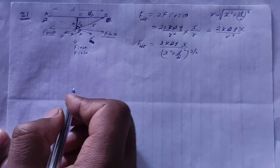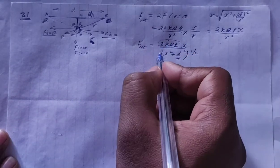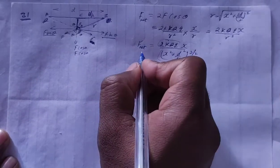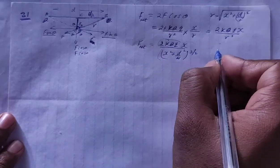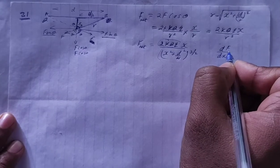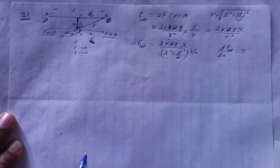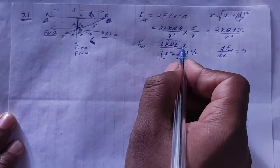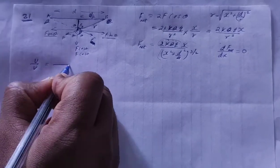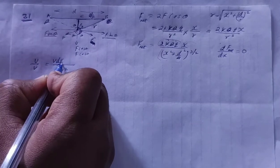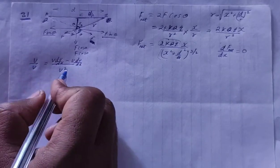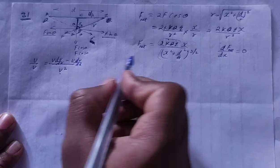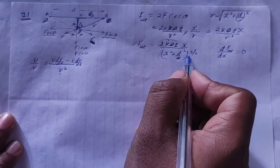So F net equals 2kQq times x divided by (x squared plus d squared/4) to the power 3/2. Here 2kQq is constant, and the variable part is x over (x squared + d²/4)^(3/2). To maximize, we use the quotient rule: d/dx of (u/v) equals (v·du/dx minus u·dv/dx) divided by v squared.